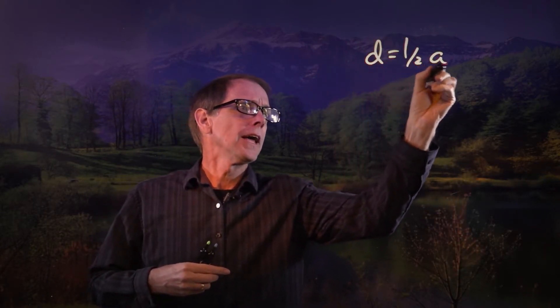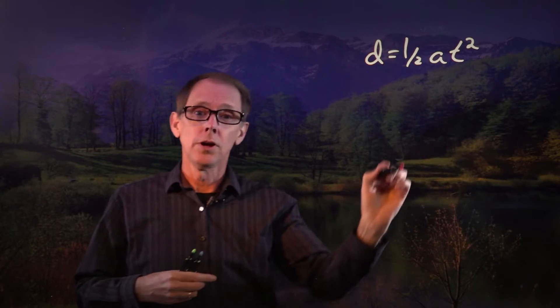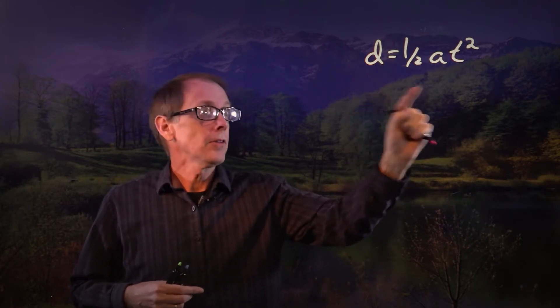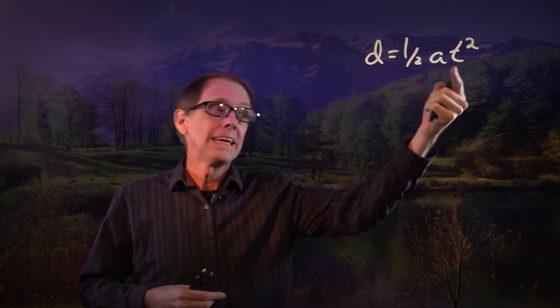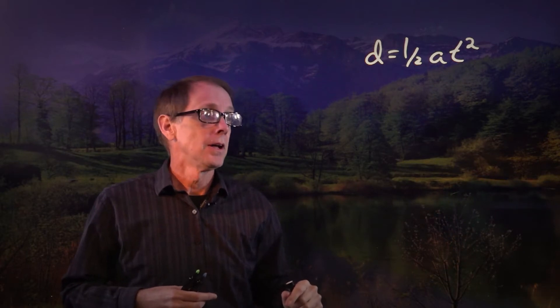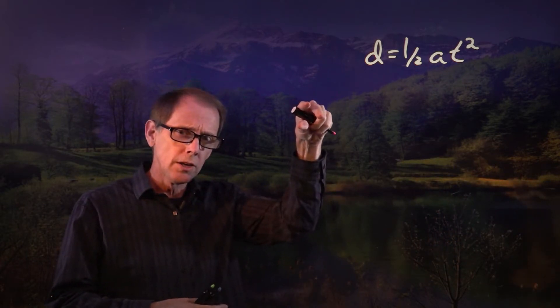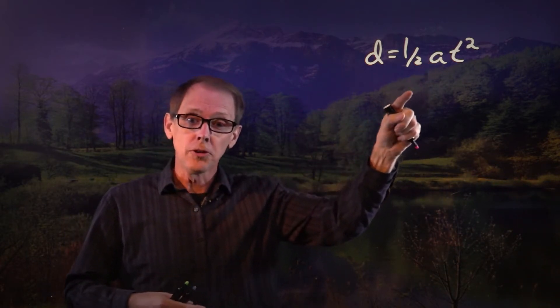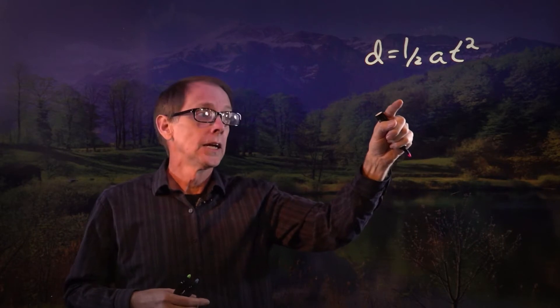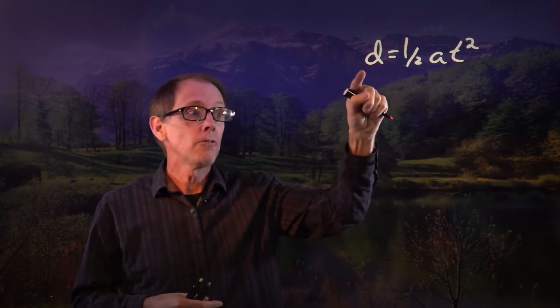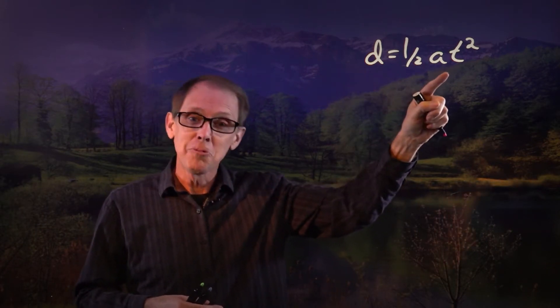Hey, how far might an object fall in one second? We can use this equation: D equals one-half at squared. D stands for distance, a is acceleration, t stands for time. We drop an object, the acceleration is going to be due to gravity, and we want to know how far will it fall in one second.